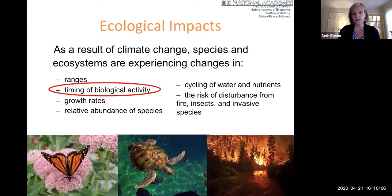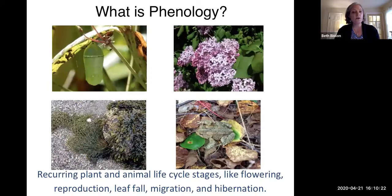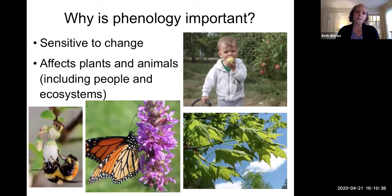What we're really focusing on for the Signs of the Seasons program is the timing of biological activity, and especially the seasonal changes that plants and animals go through. The definition of phenology is recurring plant and animal life cycle stages — like flowering, reproduction, leaf fall, migration, and hibernation — and specifically the timing of when those changes are occurring on a seasonal scale. Phenology is important because plants and animals are very sensitive to those small changes in the climate over time, and also in the weather over shorter time frames. Those changes affect the ways that plants, animals, and people interact with each other and with ecosystems.